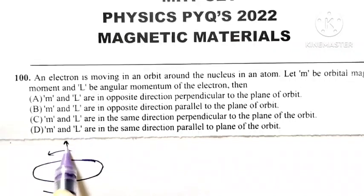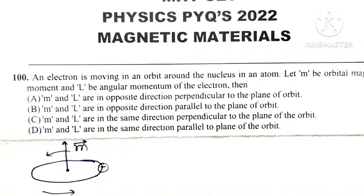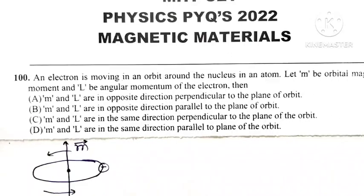Then the orbital magnetic moment of an electron is pointing upward—it is perpendicular to the plane of orbit. And the angular momentum of electron,